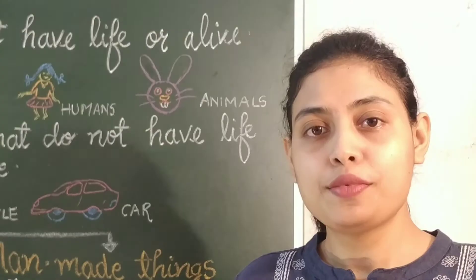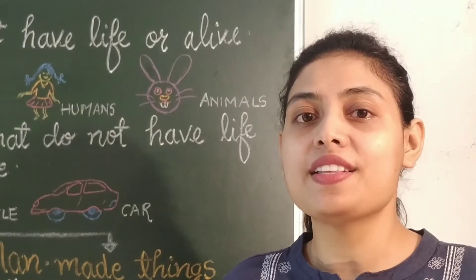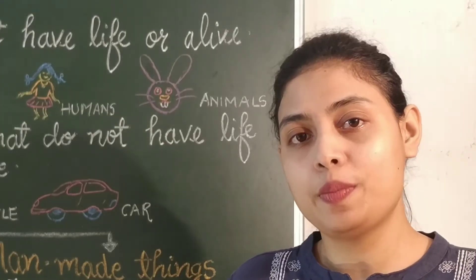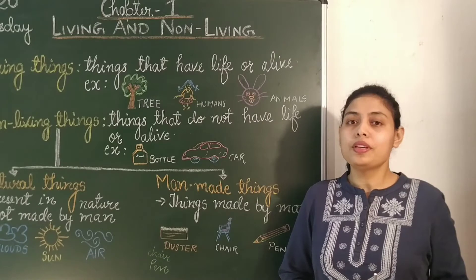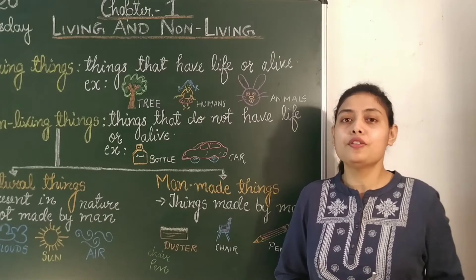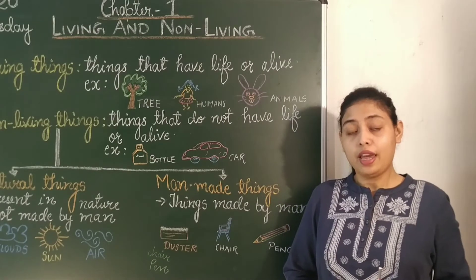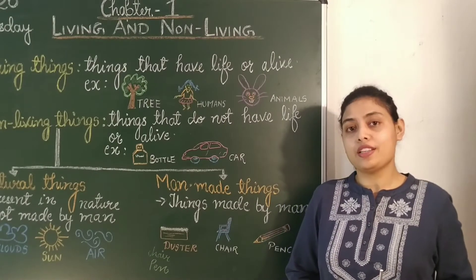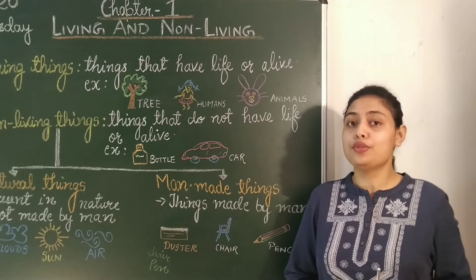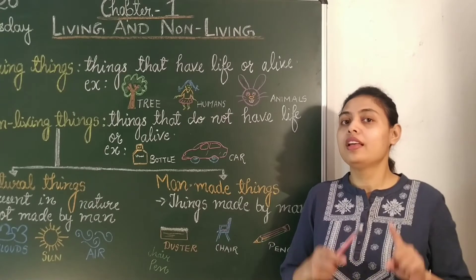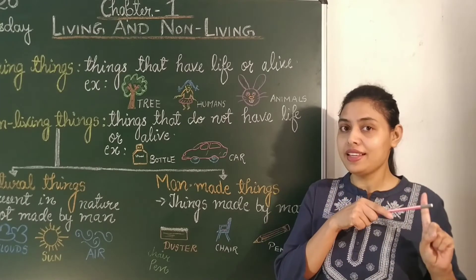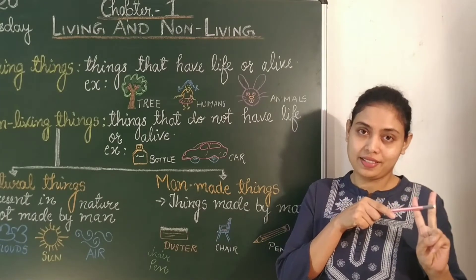Students, now I will explain the chapter on the board. Let's get started with the explanation. We see different things around us, and all things can be classified into two groups: living things and non-living things.